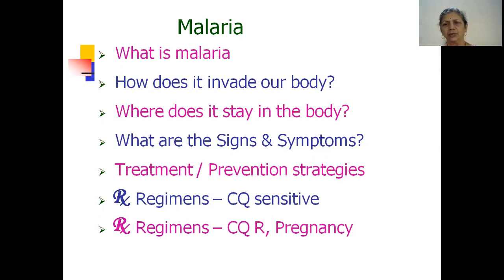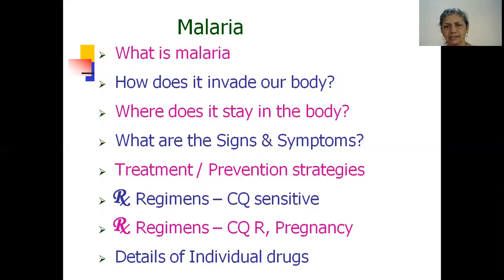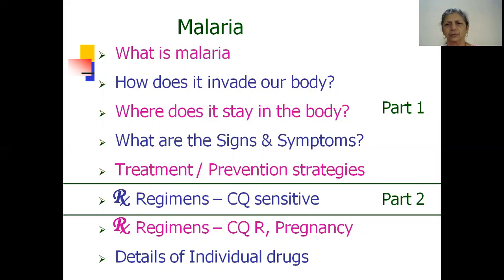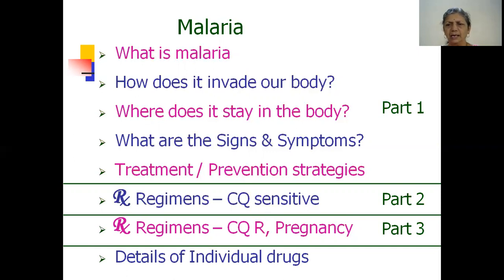We also need to employ special measures to treat malaria in situations like pregnancy. Lastly, we will see the details of individual drugs used in these regimens so that we understand why they are used, how important they are, and what could be the limitations and where they need to be avoided. The content is divided into four parts: Part 1 covers understanding malaria and broad treatment strategies; Part 2 covers treatment regimens for chloroquine-sensitive malaria; Part 3 covers chloroquine-resistant malaria and malaria in pregnancy; Part 4 covers details of individual drugs.